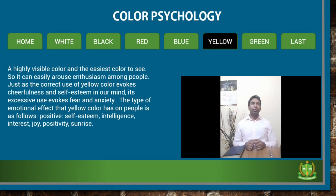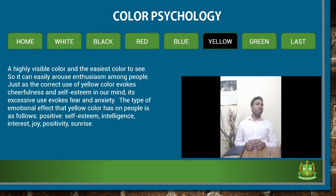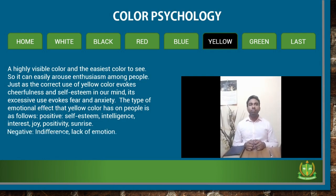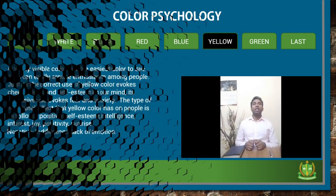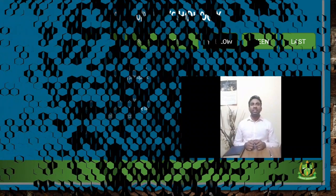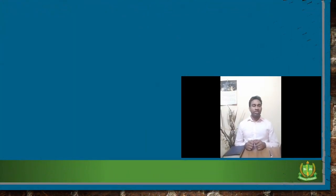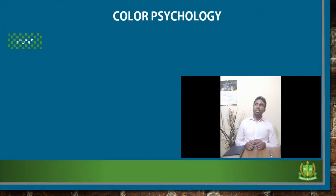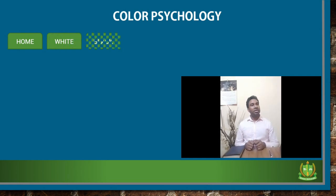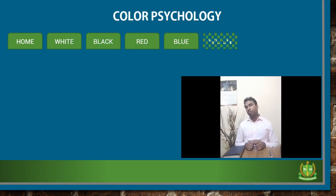The emotional effects that yellow color has on people are as follows. Positive effects: self-esteem, intelligence, interest, joy, positivity, and sunrise. Negative effects: indifference and lack of emotion.